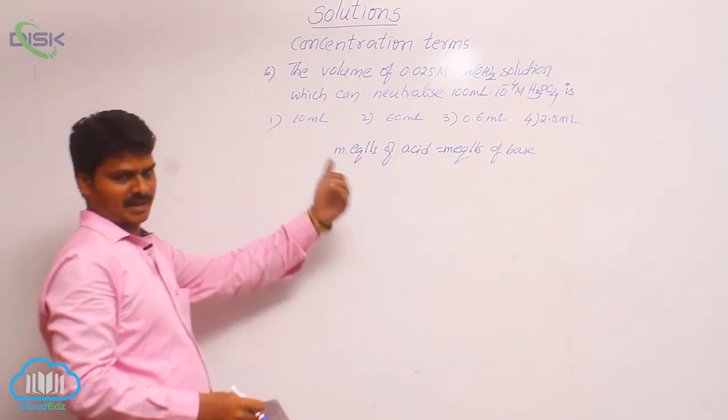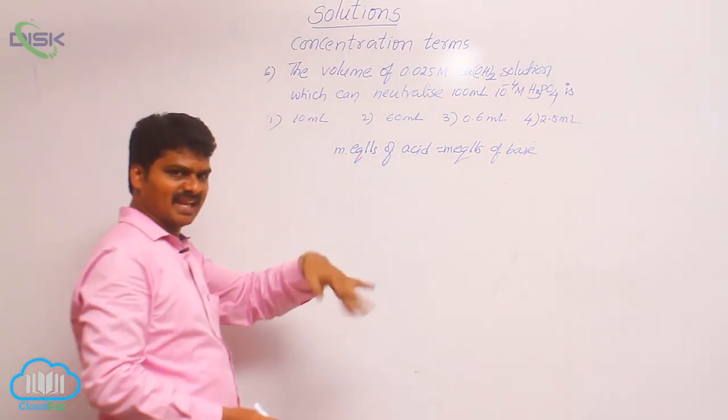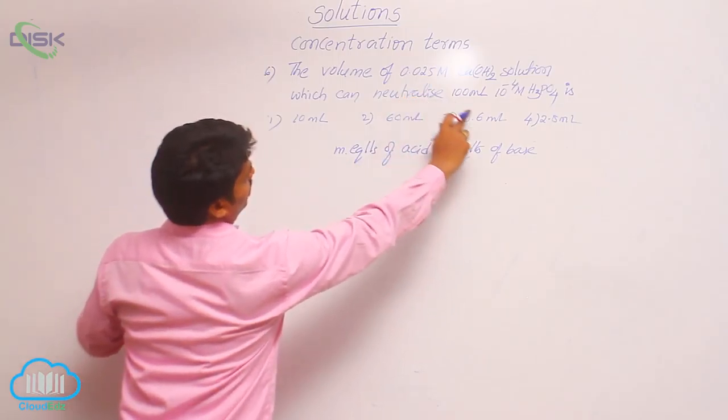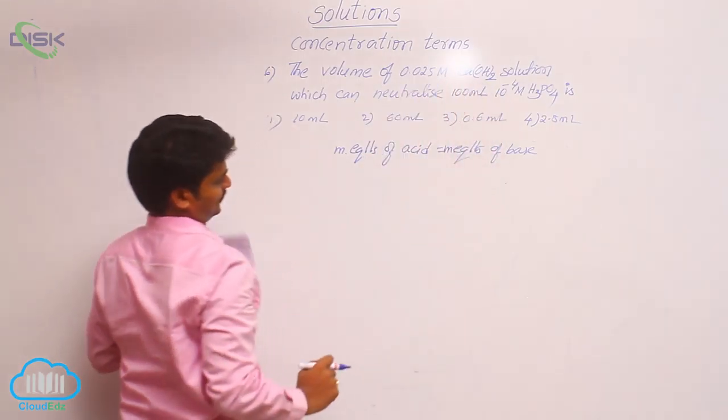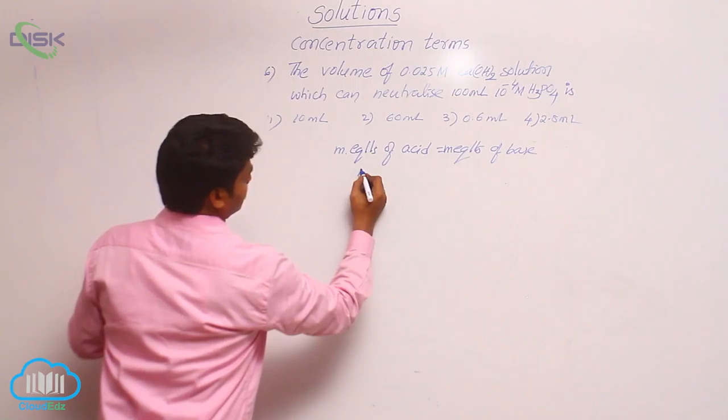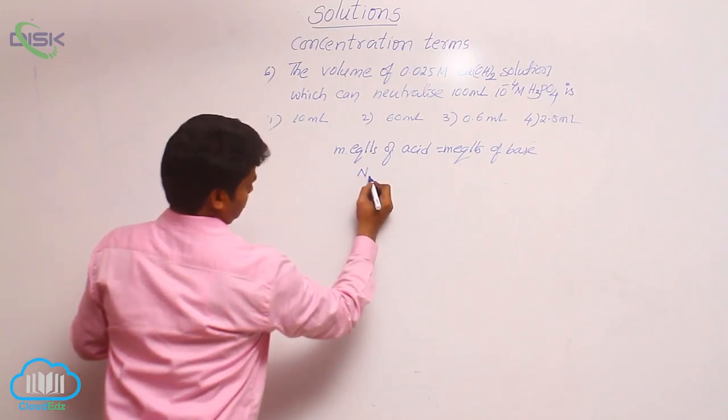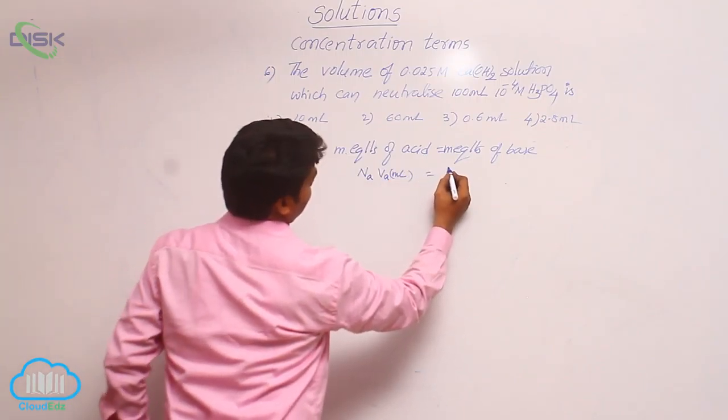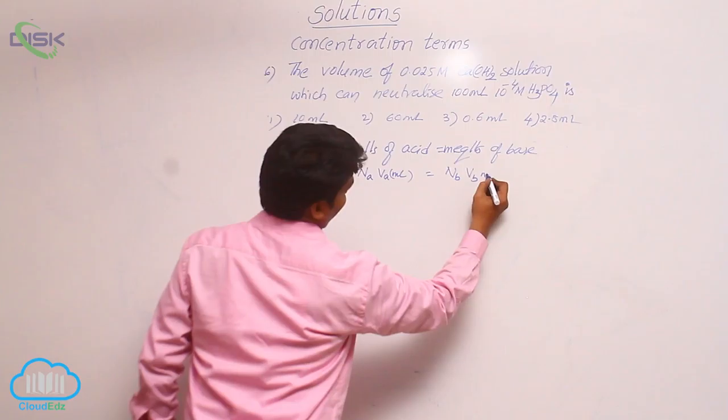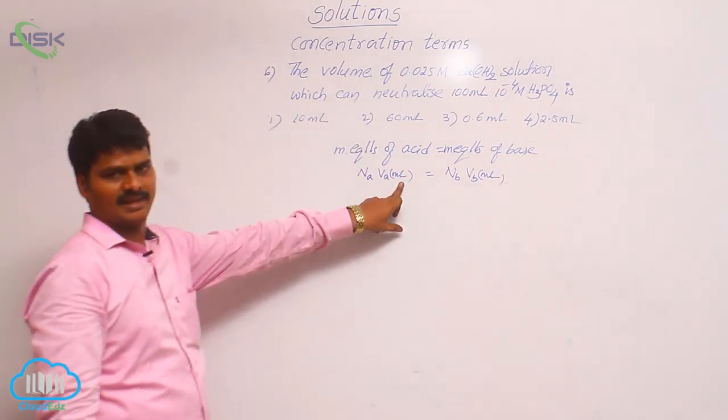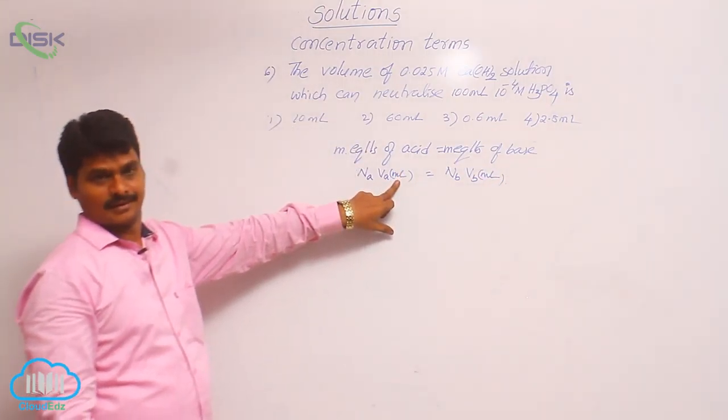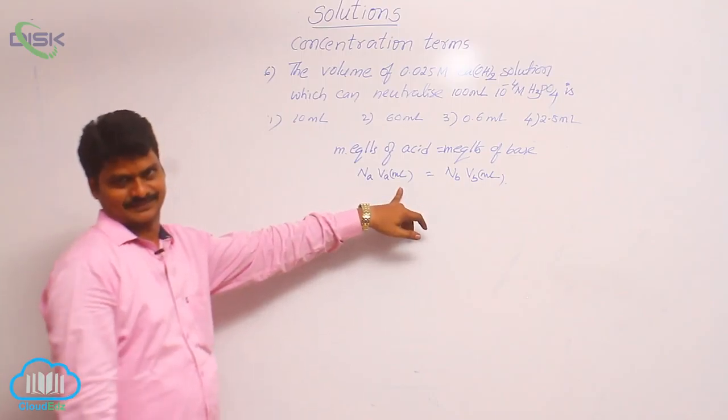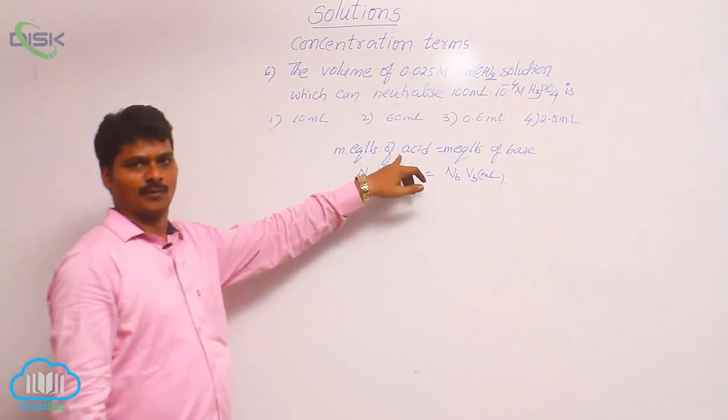What is the form of our milliequivalence? Normality into volume in milliliters. About acid we have both volume and molarity. That means normality of acid into volume of acid in ml, that is right, normality of base into volume of base in ml. Milliequivalence means there should be volume in ml. If equivalence is given, equivalence of acid means normality into volume in liters. Milliequivalence means volume in ml.